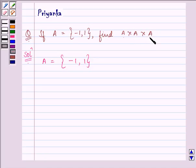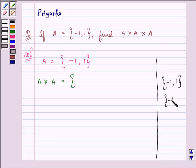So first of all, we will find out A × A. Let us write down the elements of set A in a rough column twice. That will make our work a little easier.